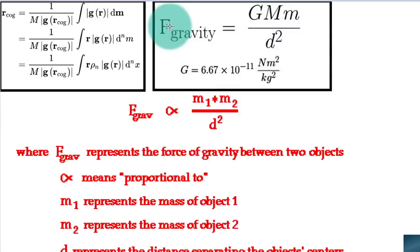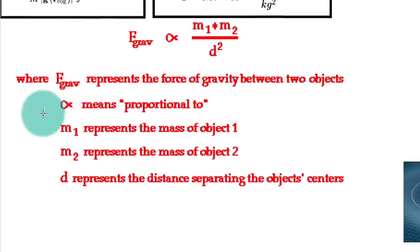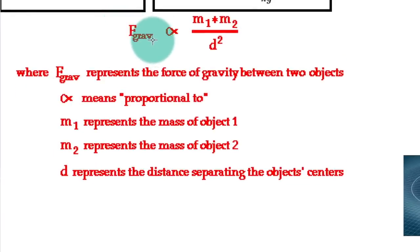Well, this is the force of gravity. Oh, then you have this thing right here, and I'll read this to you. F-grav represents the force of gravity between two objects. This little symbol here means proportional to, now we're going to read the top line, the mass of the object of the first object times the mass of the second object divided by the distance separating the object centers. Now, let's get serious for a second here. You do understand that one is a proportion, the other is an exact number, because it has G in it, right?